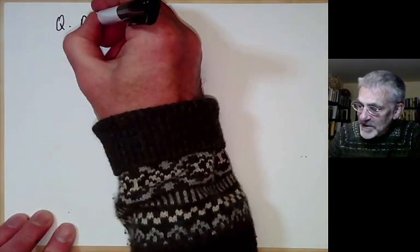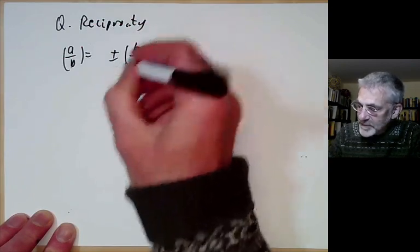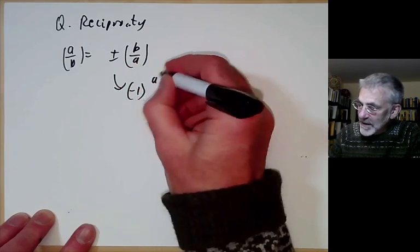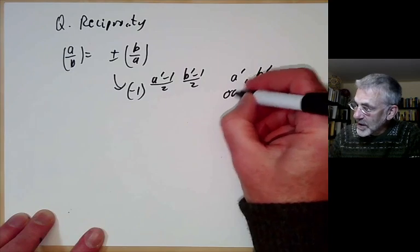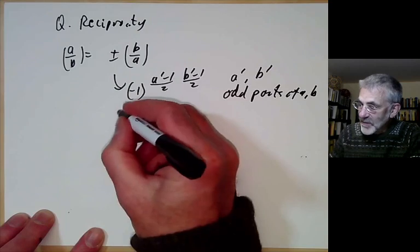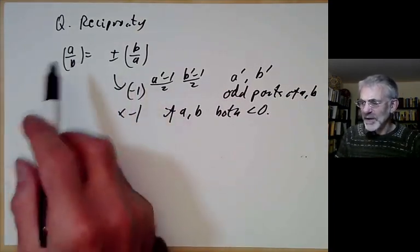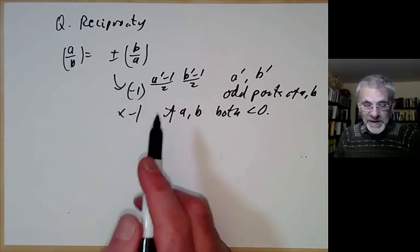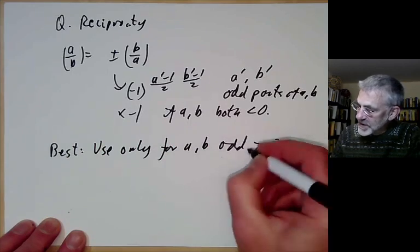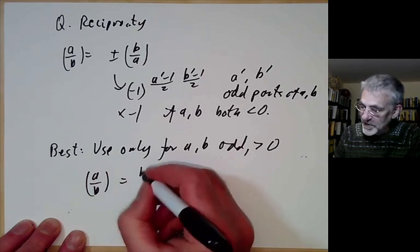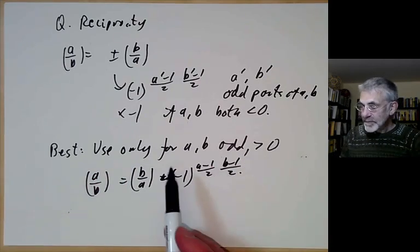There is a version of quadratic reciprocity for the Kronecker symbol: (a/b) = ±(b/a), where the sign is given by (−1) to the power [(a'−1)/2 × (b'−1)/2], just as for the Legendre symbol, except a' and b' are the odd parts of a and b. We also multiply by −1 if a and b are both negative. The cleanest form is for a and b odd and positive, where it reduces to the usual Legendre quadratic reciprocity.